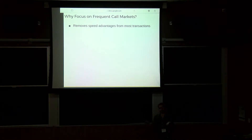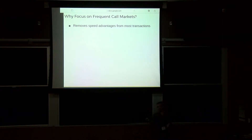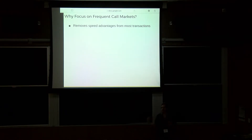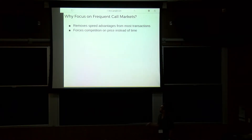One reason is that it simply removes the speed advantage. If you're aggregating all orders over the course of a second and you have a one-millisecond speed advantage, there's now only a one-millisecond window to react to information. So implicitly, this simple mechanism change eliminates a lot of the gain from any speed advantage over acquiring the same information.